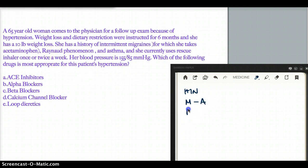She also has Raynaud's phenomena, asthma, and she currently uses rescue inhaler once or twice a week. Her blood pressure is 155 over 85, so she has hypertension. Which of the following drugs is most appropriate for this patient's hypertension?